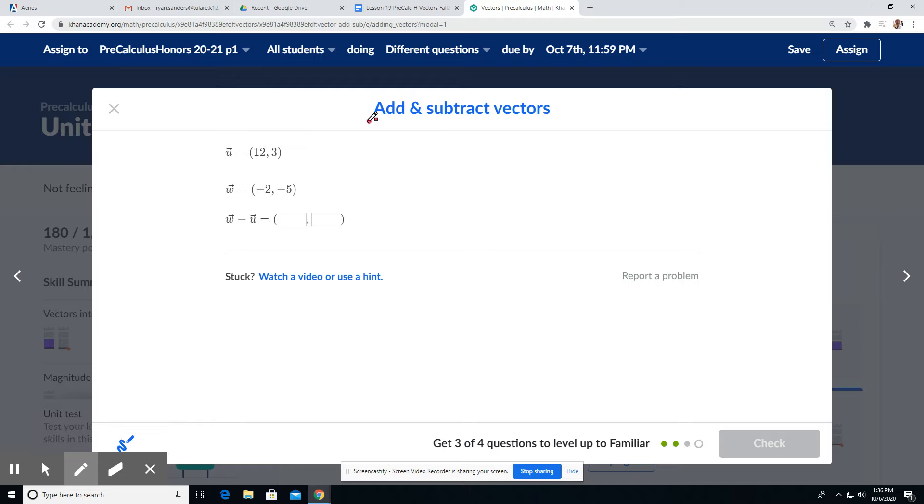For these problems, we are asked to add and subtract vectors. We do them component by component. So this is the change in X, is that first part, and the change in Y, delta Y, is that second part. So we do each part separately.